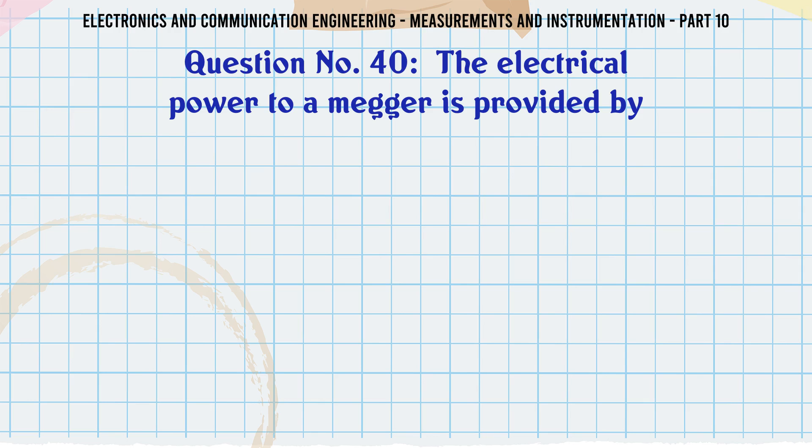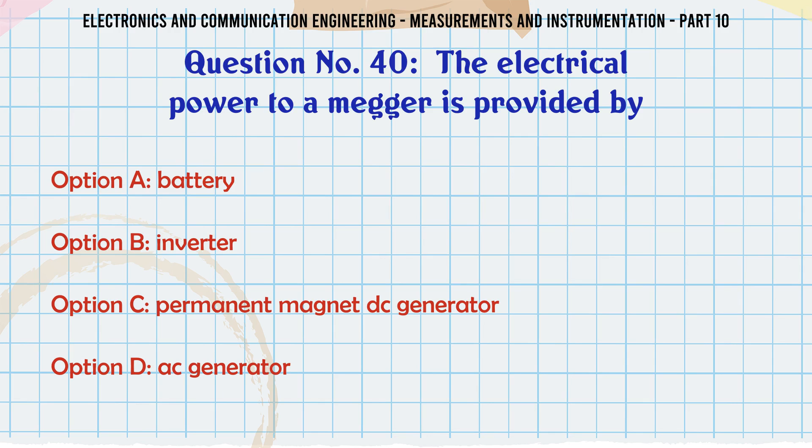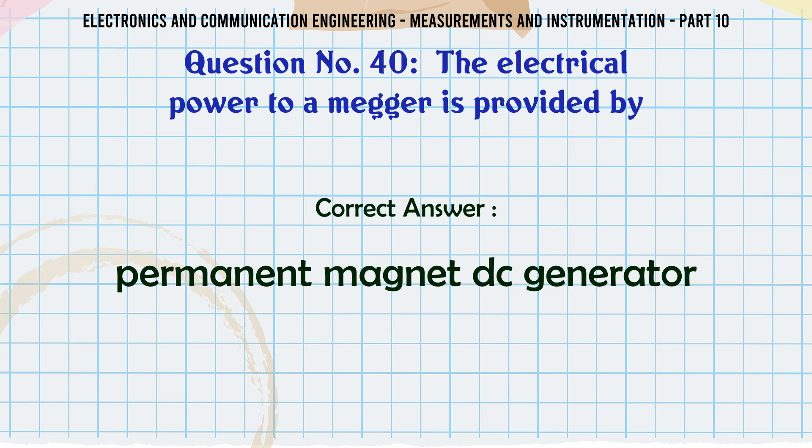The electrical power to omega is provided by: A) battery, B) inverter, C) permanent magnet DC generator, D) AC generator. The correct answer is permanent magnet DC generator.